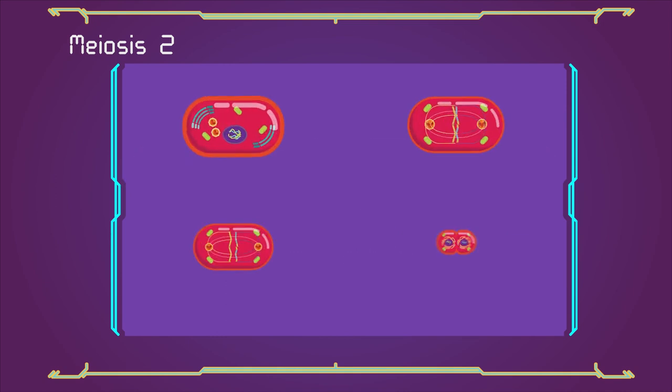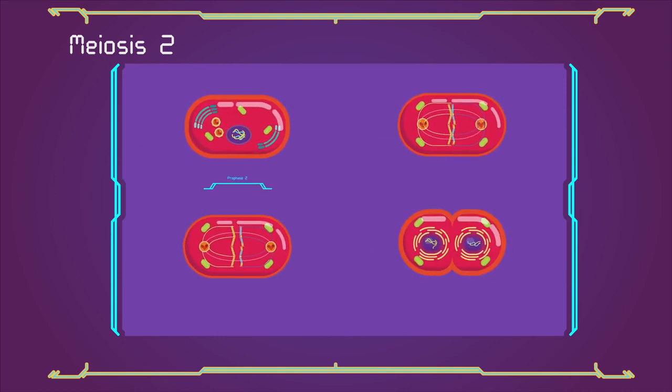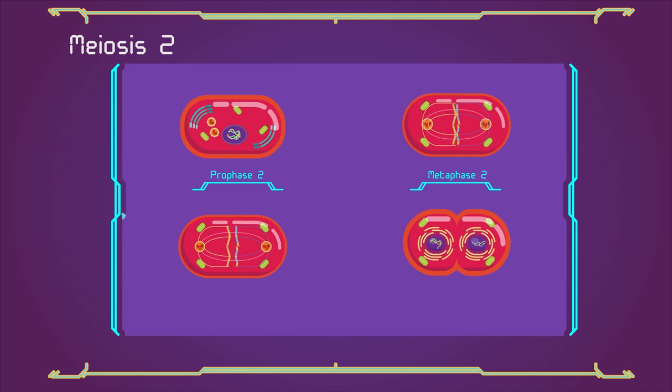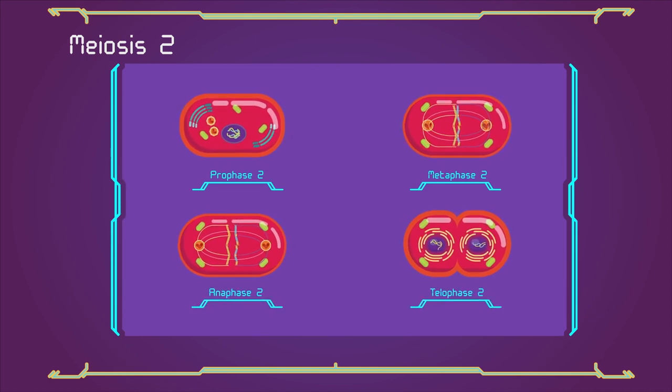The four main steps of meiosis 2 are prophase 2, metaphase 2, anaphase 2, and telophase 2.